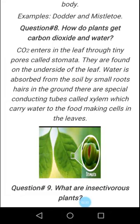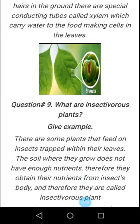You can see the open stomata in the figure, which are present inside the leaf. These are the small openings through which carbon dioxide enters and oxygen is released. Water, another major component of photosynthesis, is absorbed from the soil by tiny hairs called roots. The roots transfer the water to the leaves through conducting tubes called xylem.